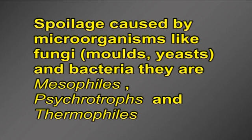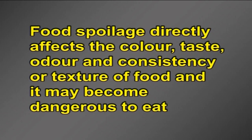In conclusion, spoilage is caused by microorganisms like fungi, molds, yeasts and bacteria. They are mesophiles, psychrotrophs and thermophiles. They spoil food by growing in it and producing substances that change the colour, texture and odour of the food. Eventually the food will be unfit for human consumption. Food spoilage directly affects the colour, taste, odour and consistency or texture of food and it may become dangerous to eat. Spoilage bacteria can cause fruits and vegetables to get mushy or slimy, or meat to develop a bad odour. Anaerobic or facultatively anaerobic spore formers are most likely to grow in canned foods. Fungi grow readily in acidic, low moisture environments. Thank you.